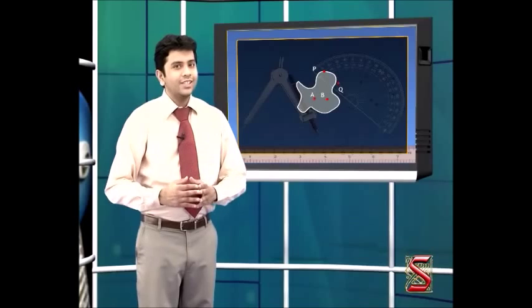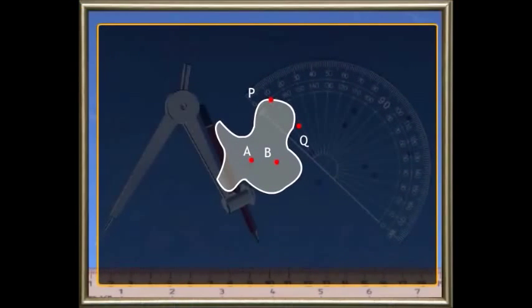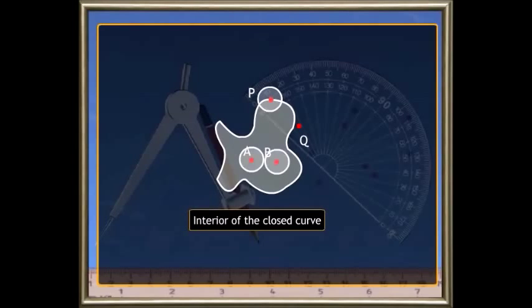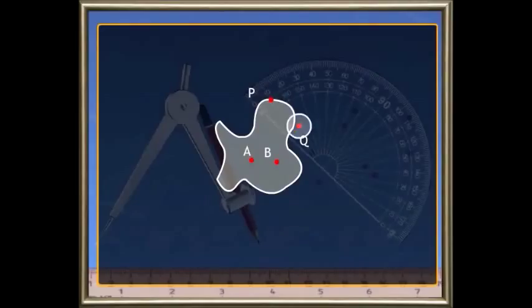Now, look at this closed figure. Did you observe some points inside and outside the figure? Any idea as to what we call them? No? Don't worry, I'll tell you. The ones that lie inside are called the interior of the closed curve, and the ones that lie outside are at the exterior of the closed curve. Isn't that easy to remember?